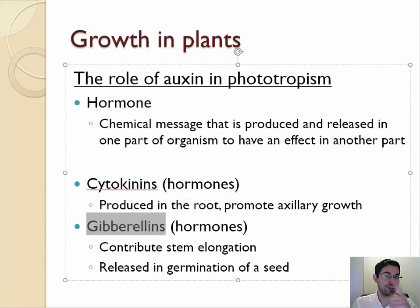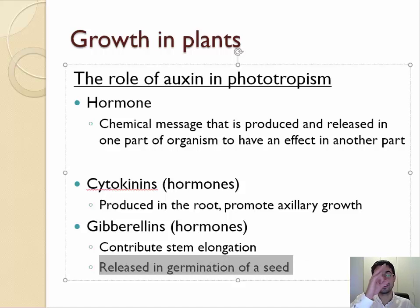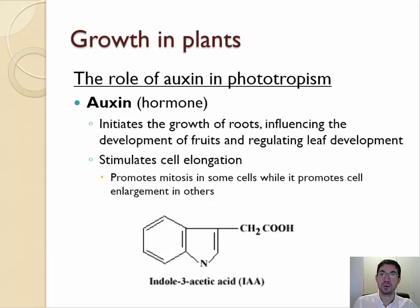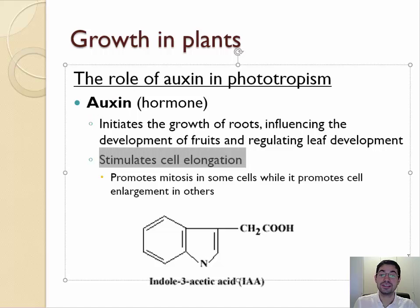This example you might as well memorize because you'll need it for 9.4: these are hormones that contribute to stem elongation, and for 9.4 you'll need to know this is the hormone that causes a seed to start growing into a tree. Gibberellic acid, or gibberellins, are the hormone that causes seed growth. The hormone you need to know for 9.3 is auxin. Auxin is a hormone that initiates the growth of roots and cell elongation in the stems of plants — it promotes the stem to grow longer.